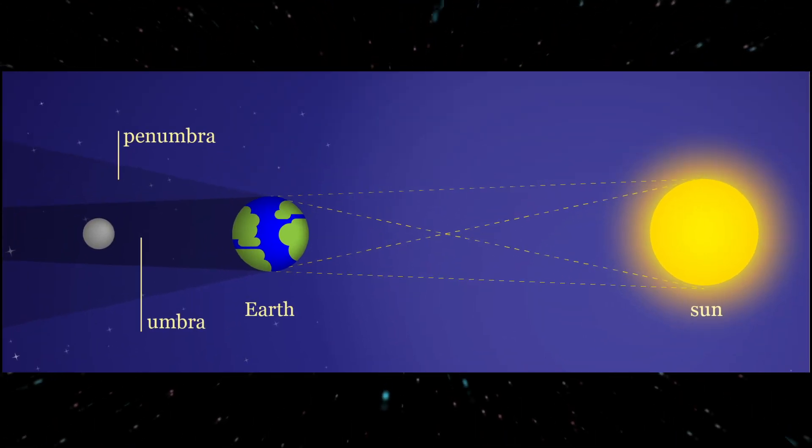In the case of a lunar eclipse, Earth, Sun, and Moon line up perfectly with Earth in between the Sun and Moon. This can only happen during a full moon.